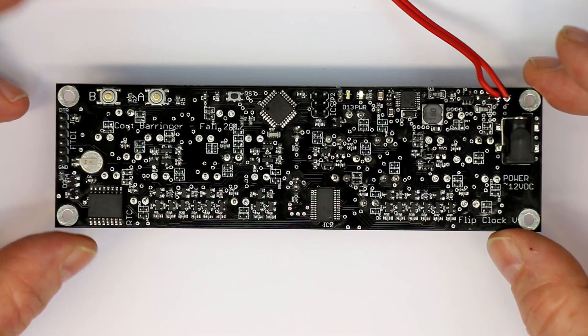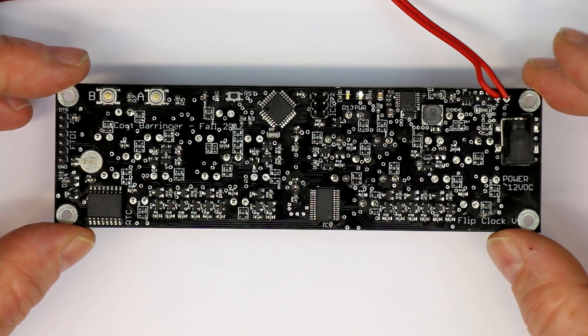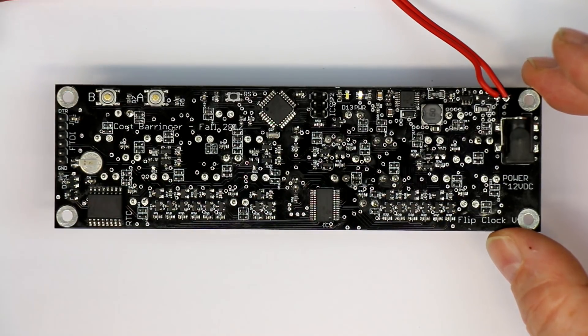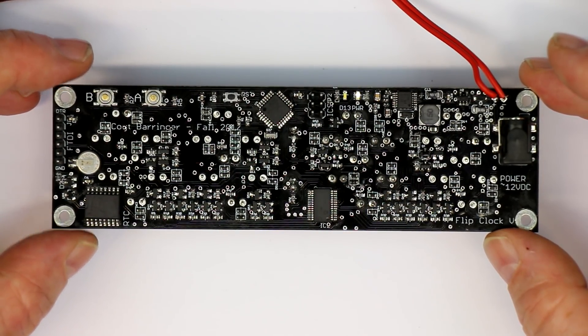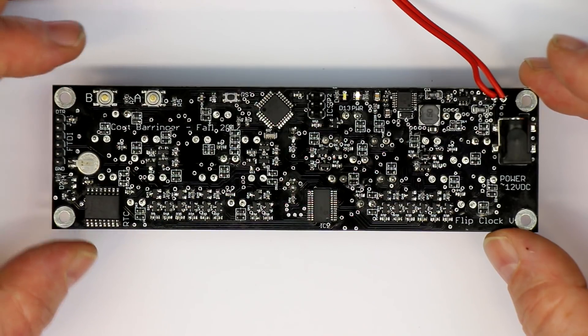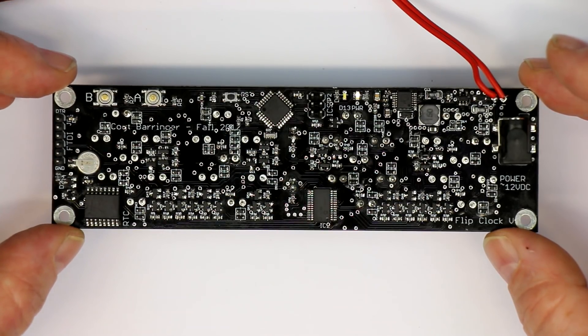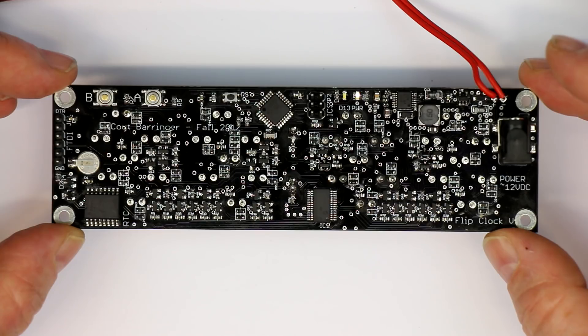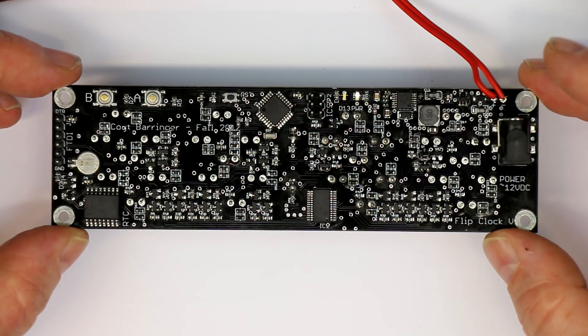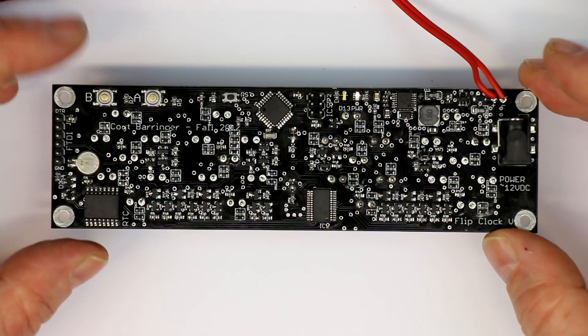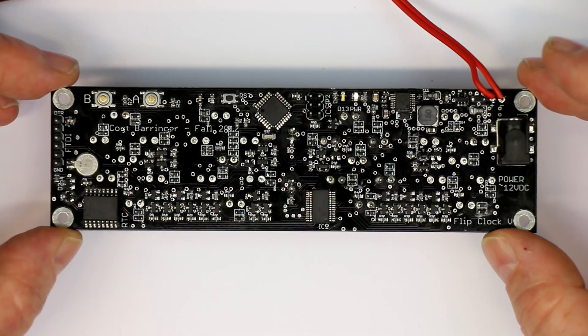Except for three broken Schottky diodes out of 50, 60 or 70, this thing worked from the first moment on. And after replacing these three broken Schottky diodes, everything was working perfectly. Without any magnifier, you will hardly be able to finish this project SMD soldering with success.